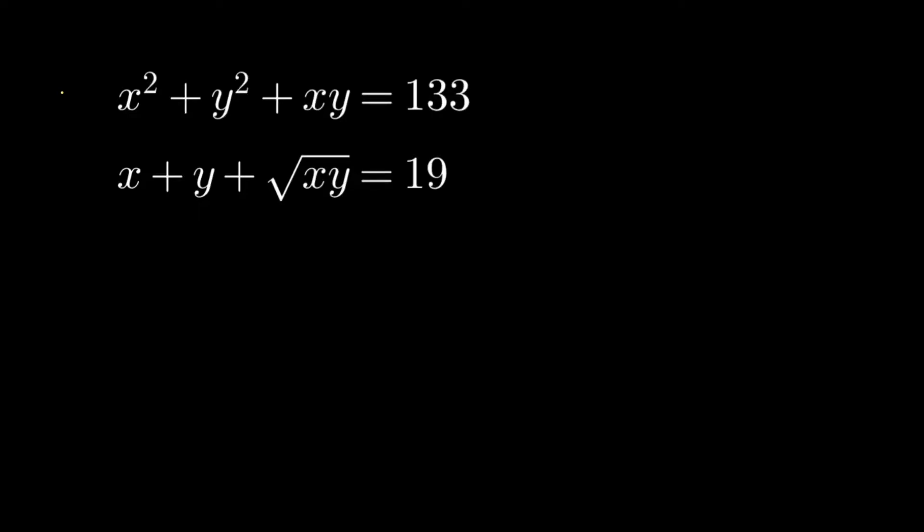Today we are going to solve a nice algebraic system of equations. The first equation is x² + y² + xy = 133, and the second equation is x + y + √(xy) = 19. The question is to find the values of x and y in the real plane that satisfy both equations.